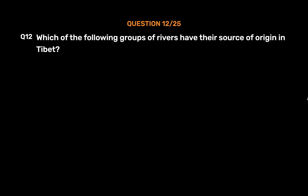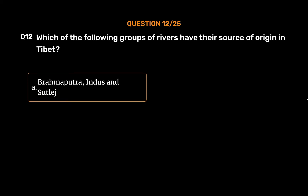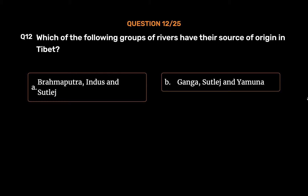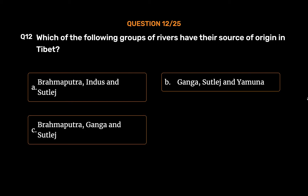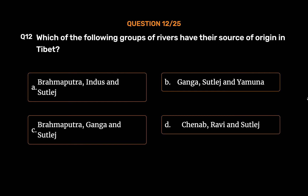Question No. 12. Which of the following groups of rivers have their source of origin in Tibet? Option A: Brahmaputra, Indus, and Satluj. Option B: Ganga, Satluj, and Yamuna. Option C: Brahmaputra, Ganga, and Satluj. Option D: Chinab, Ravi, and Satluj.